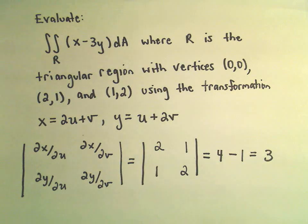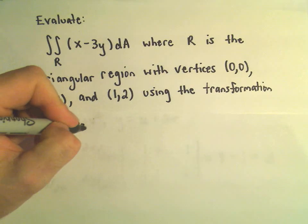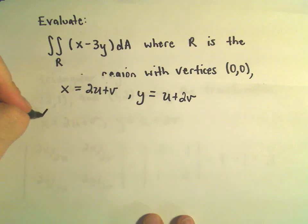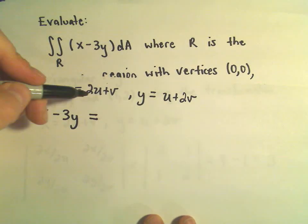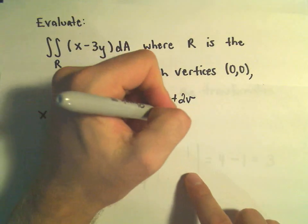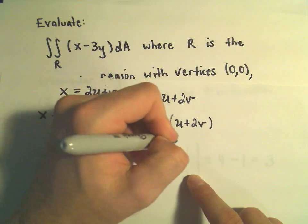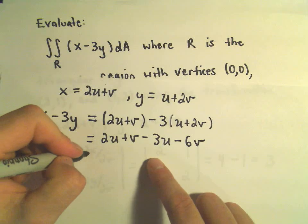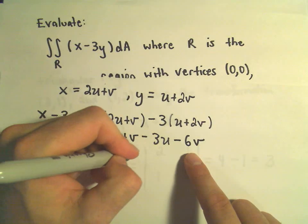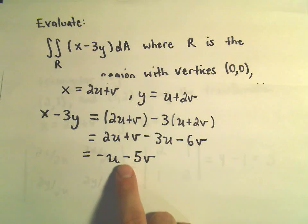In the integrand we're integrating x minus 3y. We substitute x equals 2u plus v and y equals u plus 2v. So x minus 3y becomes (2u + v) minus 3 times (u + 2v), which simplifies to 2u + v − 3u − 6v. That gives us negative u minus 5v. So instead of integrating x minus 3y, I'm going to be integrating negative u minus 5v.